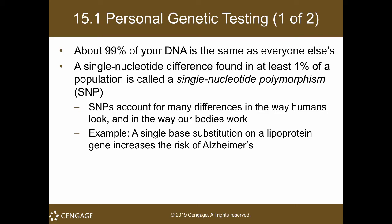Single nucleotide polymorphism is just a single base difference found in at least 1% of the population. Although it's just 1%, a measly 1%, it has quite a lasting effect — actually a lifetime effect on us. These SNPs account for many differences in the way humans look and in the way our bodies work. For example, some people have a stronger immune system than others, some people are more susceptible than others.